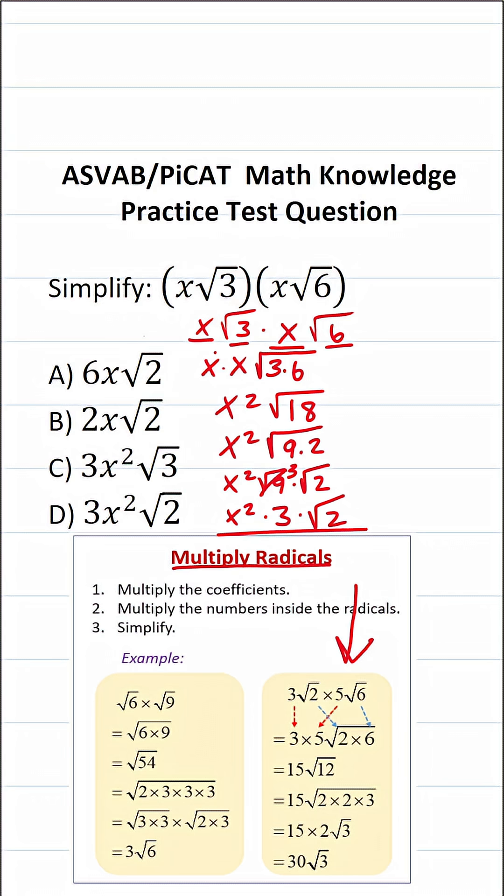So this becomes x squared times three times the square root of two. And let's go ahead and clean this up.